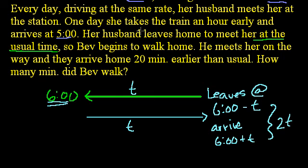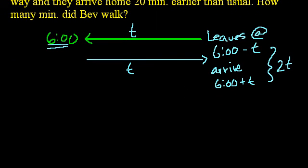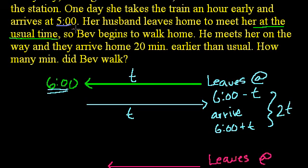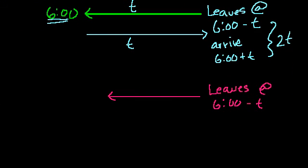Now what happens on this day? Her husband leaves home to meet her at the usual time. So once again, he is going to leave. I'll do this in red. He leaves at 6 o'clock minus t. And then she arrived early, so she's going to be walking back. So there's going to be some smaller time that it takes him to reach her. He's going to travel a shorter distance and of course it's going to take him less time, because she started walking. She arrives at 5 o'clock and she begins to walk home, so she's going to make some distance up. He's not going to have to travel quite as far. And then whatever time that was, he goes back the other way. It's going to be the same amount of time.